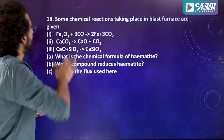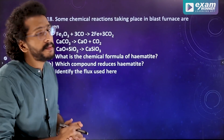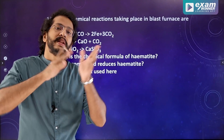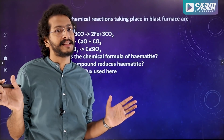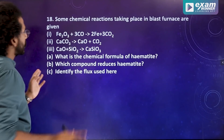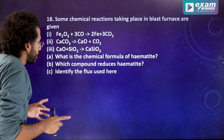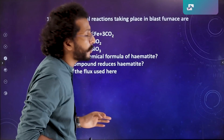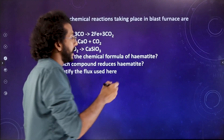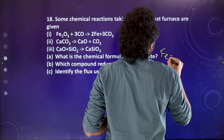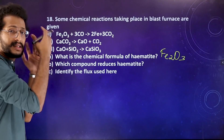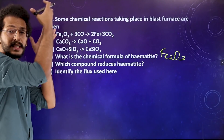Question number 18: some chemical reactions taking place in a blast furnace are given. The chemical formula of hematite is Fe2O3. We are going to discuss the process in the blast furnace.